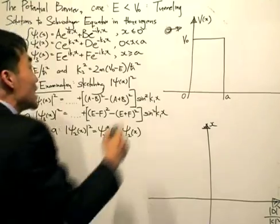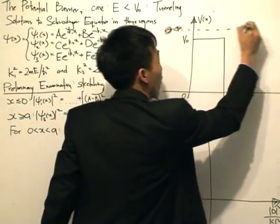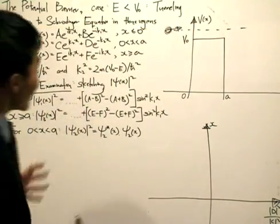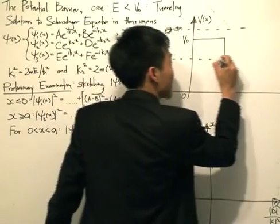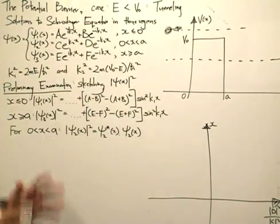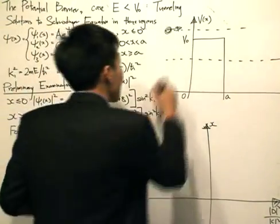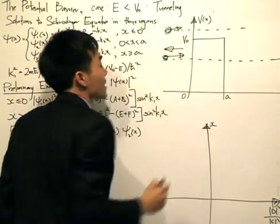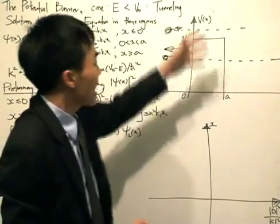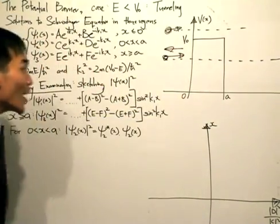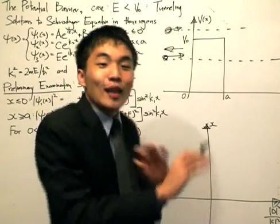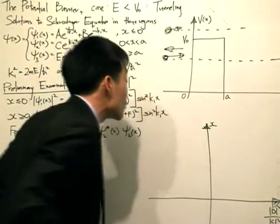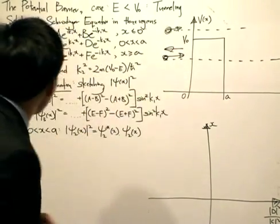Previously, when the energy of the particle was greater than the potential V0, quantum mechanics tells us the particle is able to reflect. But now we are considering the case where the energy is less than V0, and the picture changes altogether. Classical mechanics says there will be total reflection because the particle cannot have negative kinetic energy inside the barrier. But quantum mechanics gives us a totally different story — that is the point of our study today.